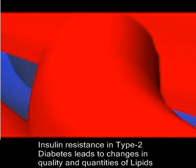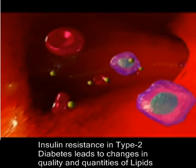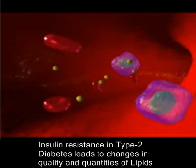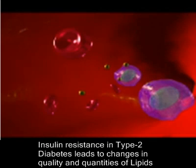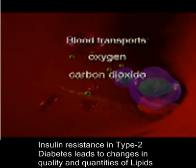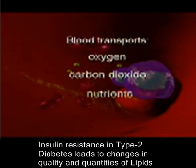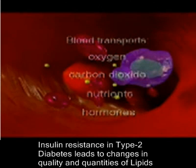The cardiovascular system comprises the heart, blood vessels, and blood. Blood has many life-sustaining responsibilities, including transporting oxygen, carbon dioxide, nutrients, and hormones throughout the body.